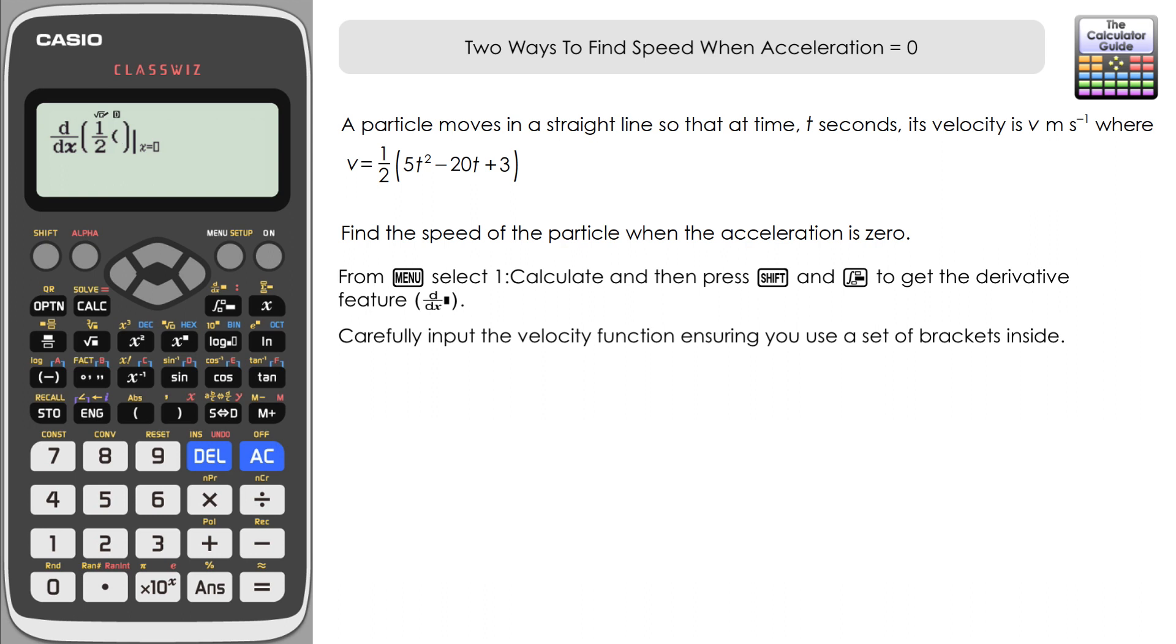Inside to contain the quadratic that we've got there, it's 5x squared minus 20x plus 3. And then be very careful here, you just need to close off those brackets to ensure that we get a half of the function that we've got within there.